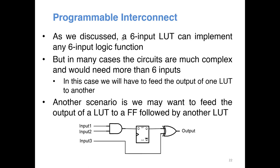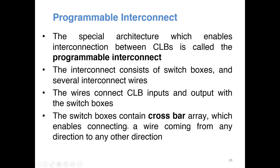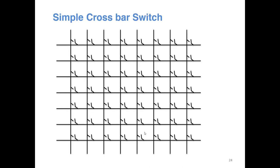Let's find out how multiple CLBs are connected together. We take this circuit as an example: two gates and one flip-flop. Using two-input LUTs, we need one LUT for the AND gate, one LUT for the XOR gate, and one flip-flop. A special structure called programmable interconnects enables interconnection of CLBs. The interconnections consist of switch boxes and several wires. The wires connect the output from a CLB to the inputs of switch boxes, and the output from switch boxes to the inputs of CLBs. Each switch box contains a crossbar array.